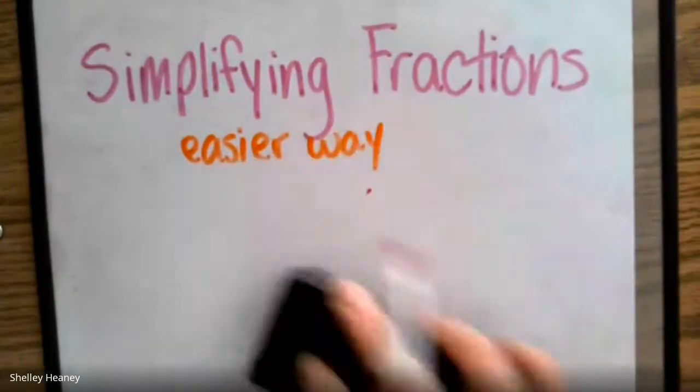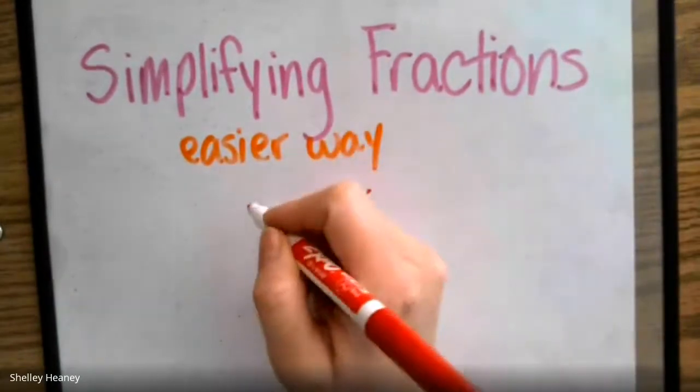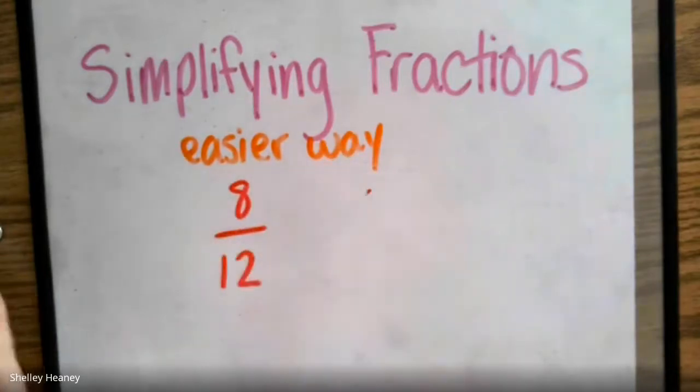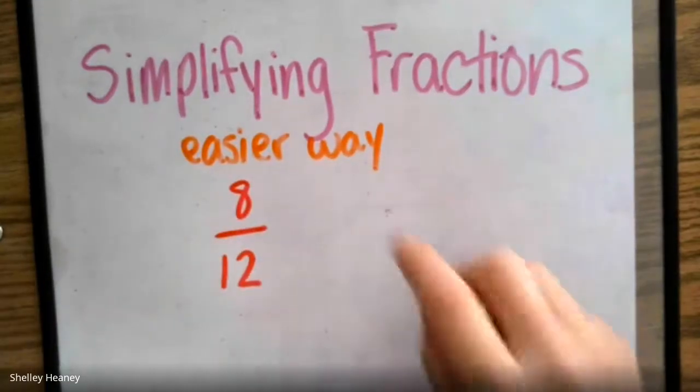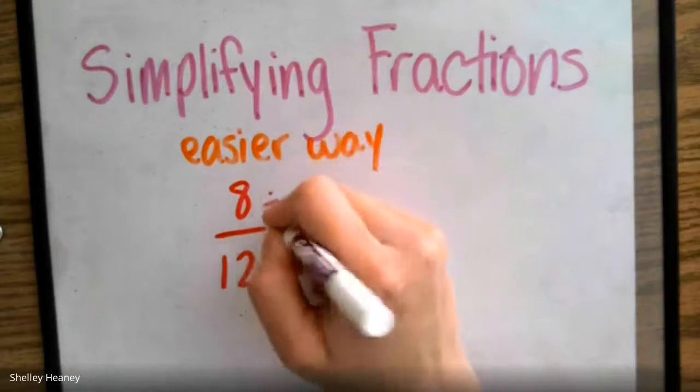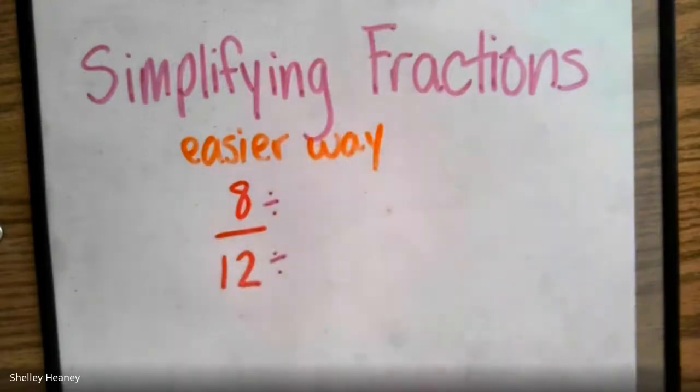Let's try a different one. What about 8 twelfths? We can simplify 8 twelfths because I know that I can divide a number on the top and the bottom to make this smaller. What number could we try dividing on the top and the bottom to make this smaller? Can I try by 1? No, because if we divide by 1, we would get the same number.